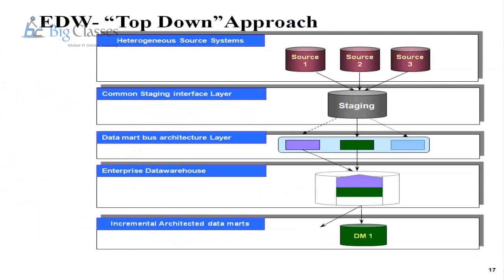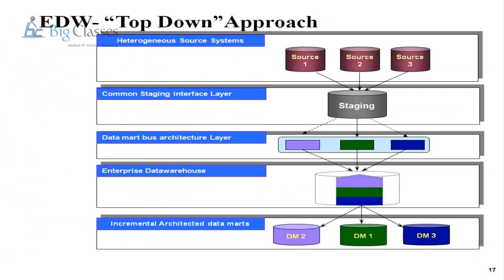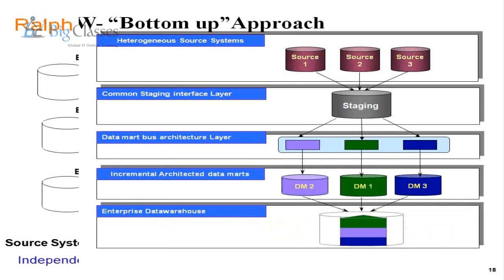OLTP means Online Transaction Processing System — that is our day-to-day transactional data. OLAP means Online Analytical Processing System, which maintains all analytical data. Along with definitions, I'll also provide real project examples so you understand how these concepts are used in actual projects, not just theory.